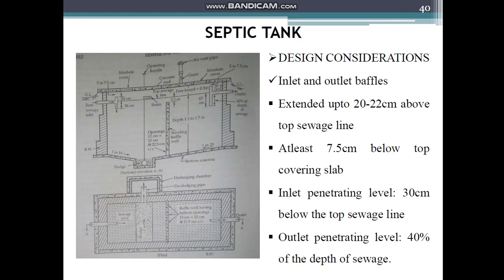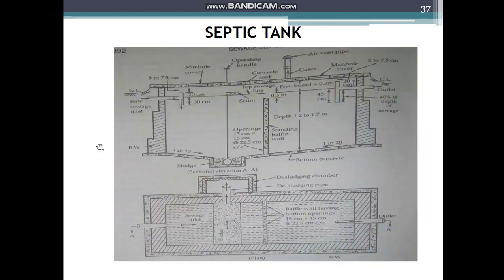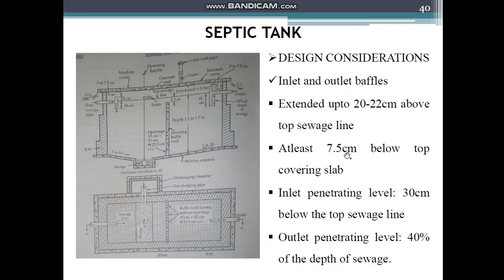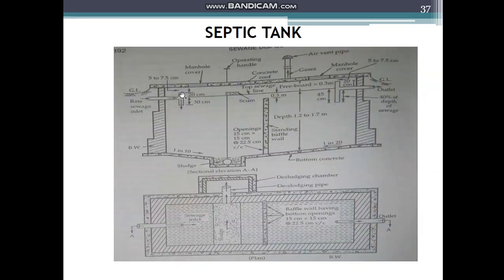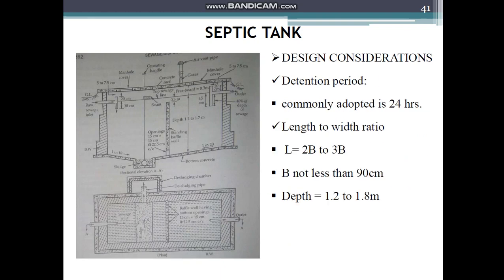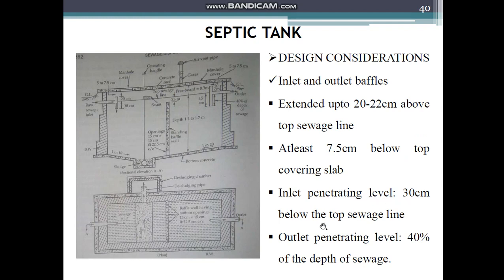The inlet and outlet pipes extend 20 to 22 centimeters above the top sewage line, and at least 5 to 7.5 centimeters below the top covering slab. The inlet penetrating level is 30 centimeters below the top sewage line, and the outlet penetrating level is 40% of the depth of sewage.